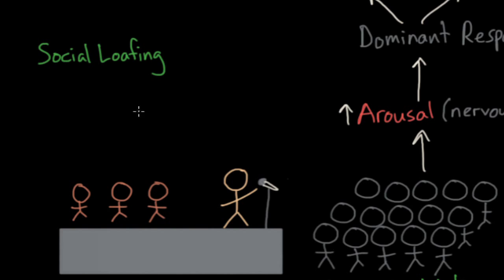Social loafing is a tendency to put forth less effort when working on a group task, if the individual contributions aren't evaluated. And if you've ever worked on a group project before, you've probably experienced this. Sometimes there's that one person or a few people in the group who don't want to contribute anything, because they probably figure that the group will get it done anyway. In other words, it's a group-produced reduction in individual effort.